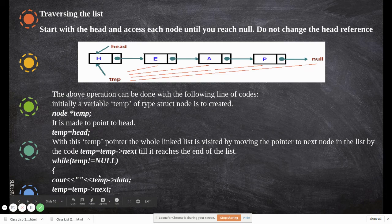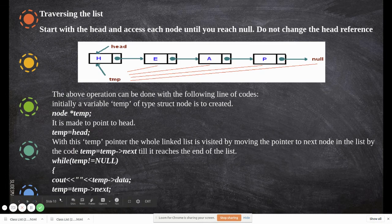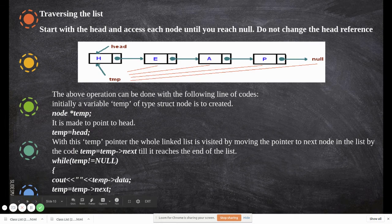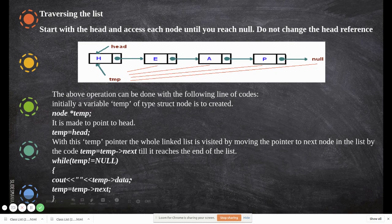By accessing temp->next, we move the pointer forward. We keep doing this until temp becomes null — which happens after processing the last node, where temp->next is null. When the while condition checks and finds null, the loop exits. This is how you traverse the whole list and print each value using temp->data.